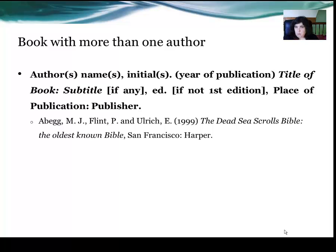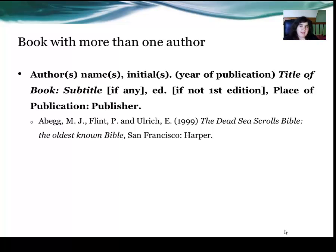For a book reference example, you have a similar convention: the primary author's surname, then their initials, comma, the next author, comma, their initials, and Ulrich, E., year of publication. Then the title of the book — The Dead Sea Scrolls Bible — with the first letter of each word capitalised and the title in italics. The subtitle is in lower case, except for proper nouns such as 'Bible'. Then the place of publication, San Francisco, colon, and the publisher, Harper.